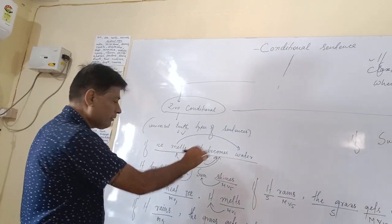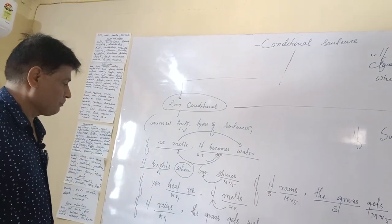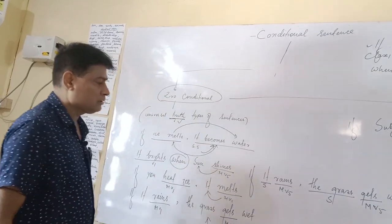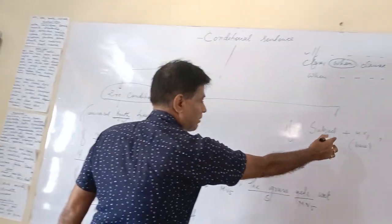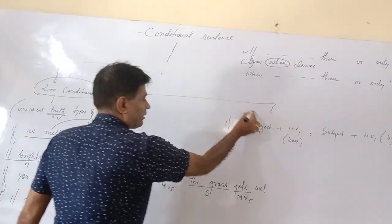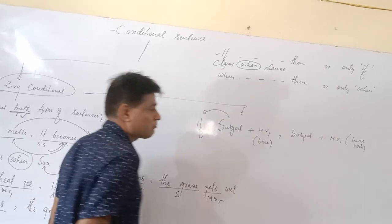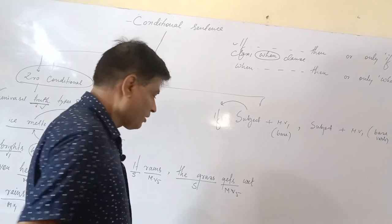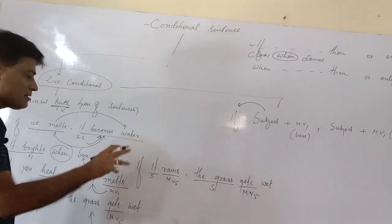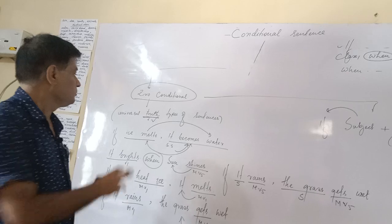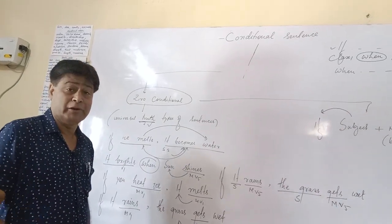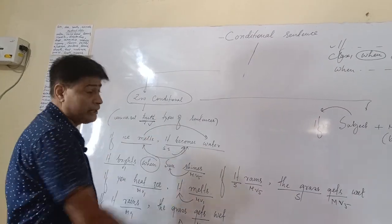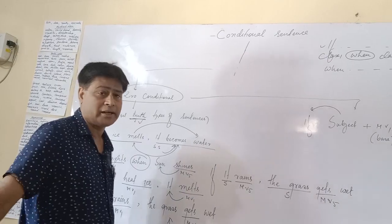Remember, wherever I have made the sentences, all the sentences are types of truth types. I mean, you have to use subject plus main verb one. Before that if, then comma, subject plus main verb one. Main verb one can be called as a base verb. These are the sentences called zero conditional sentences. If you have any doubt, please let me know. Thank you very much for learning zero conditional sentences.